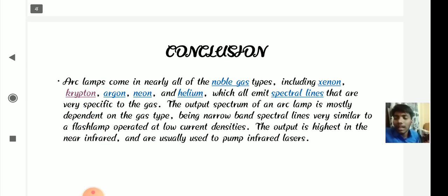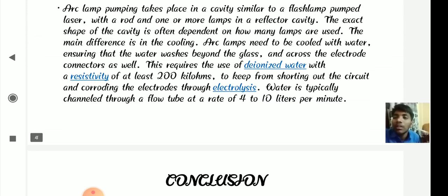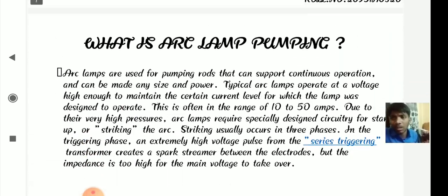In conclusion, arc lamps come in nearly all of the noble gas types, including xenon, krypton, argon, neon, and helium, which all emit spectral lines that are very specific to the gas. The output spectrum of an arc lamp is mostly dependent on the gas type, being narrow band spectral lines very similar to a flashlamp operated at low current densities. The output is highest in the near infrared and are usually used to pump infrared.